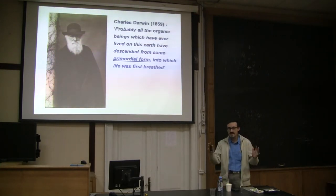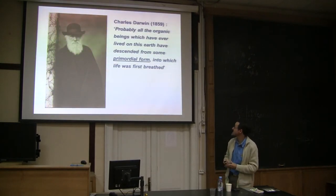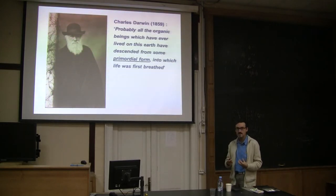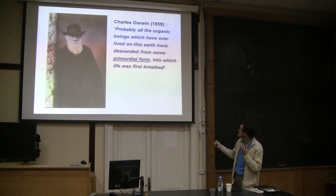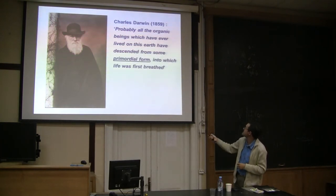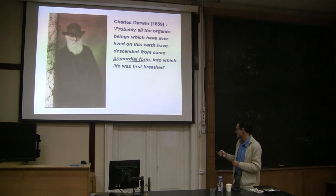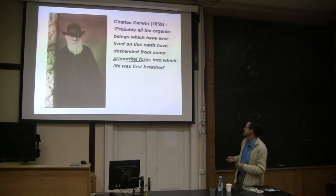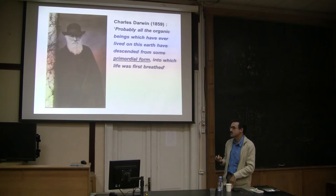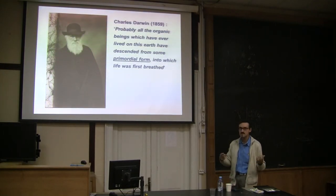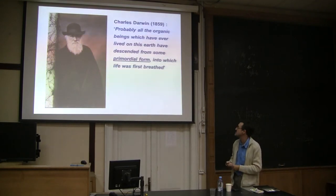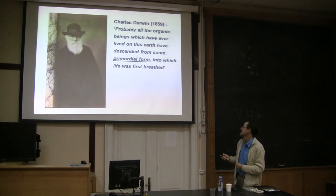The real development of evolutionary theory was done by Charles Darwin. Concerning the origin of life and early evolution, in his famous book on the origin of species, he already said that probably all organic beings that live on Earth descend from only one, which he calls a primordial form, into which life was first created. He was saying that all different species you can see today descend from a single original one.